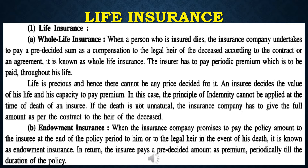The insurance amount is based on the premium as per the capacities of different persons, so the premium will differ. An insurer decides the value of his life and his capacity to pay premium, on the basis of which the insurable amount is decided. The second type is endowment insurance.